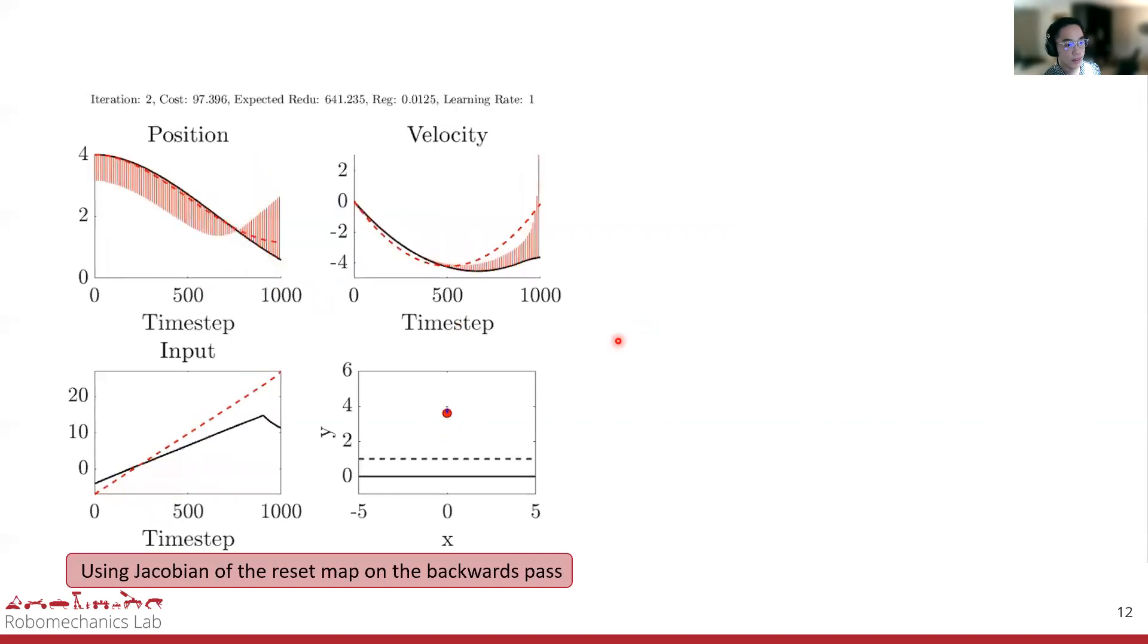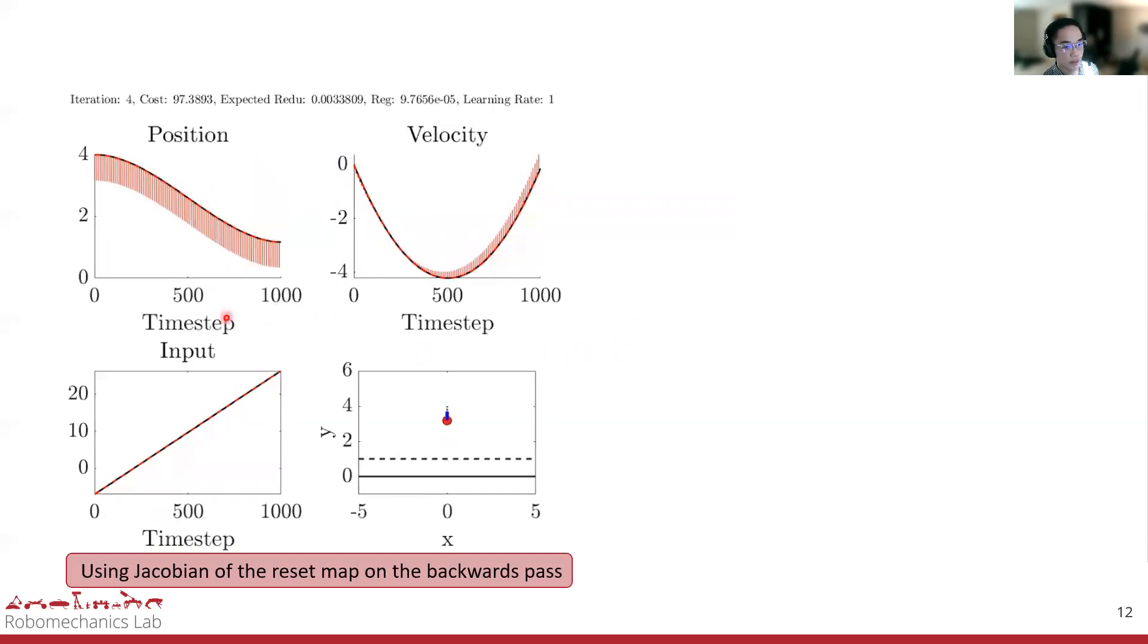In this case, it's actually more optimal to keep the bounce because a lot of energy is lost by keeping the ball afloat. Note that once this impact is taken away, this just becomes traditional smooth iLQR.